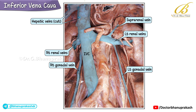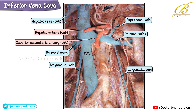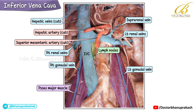Just above the level of the left renal vein, the cut ends of the hepatic artery and the superior mesenteric artery can be seen. On either side, the gonadal veins lie anterior to the psoas major muscle. Clusters of lymph nodes are present around the inferior vena cava.